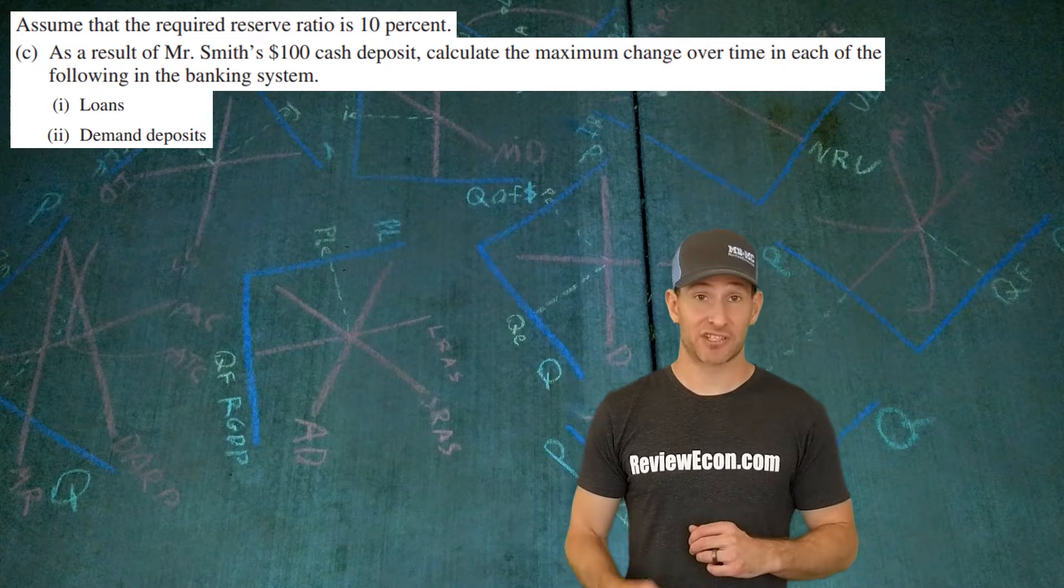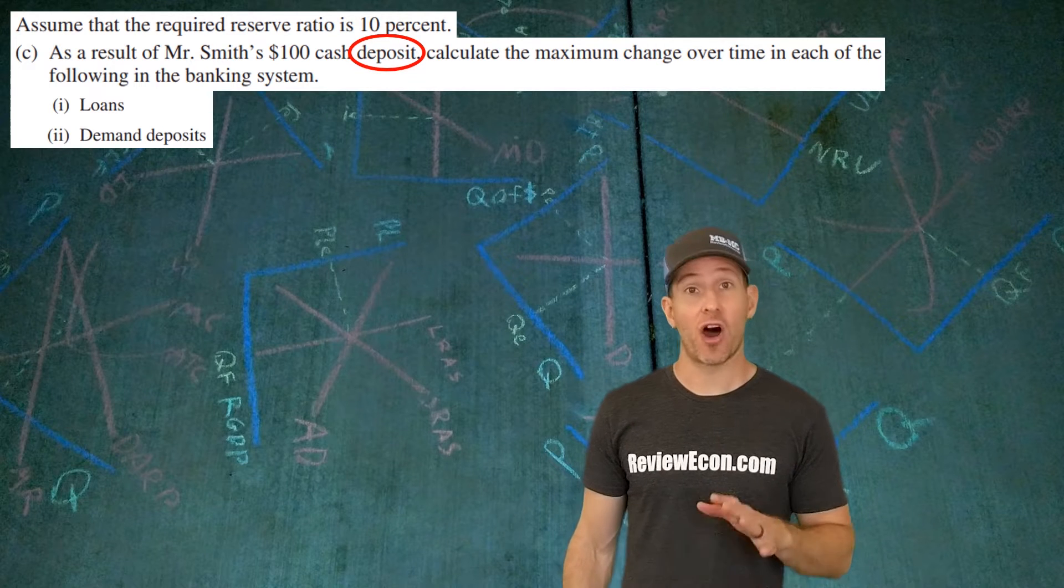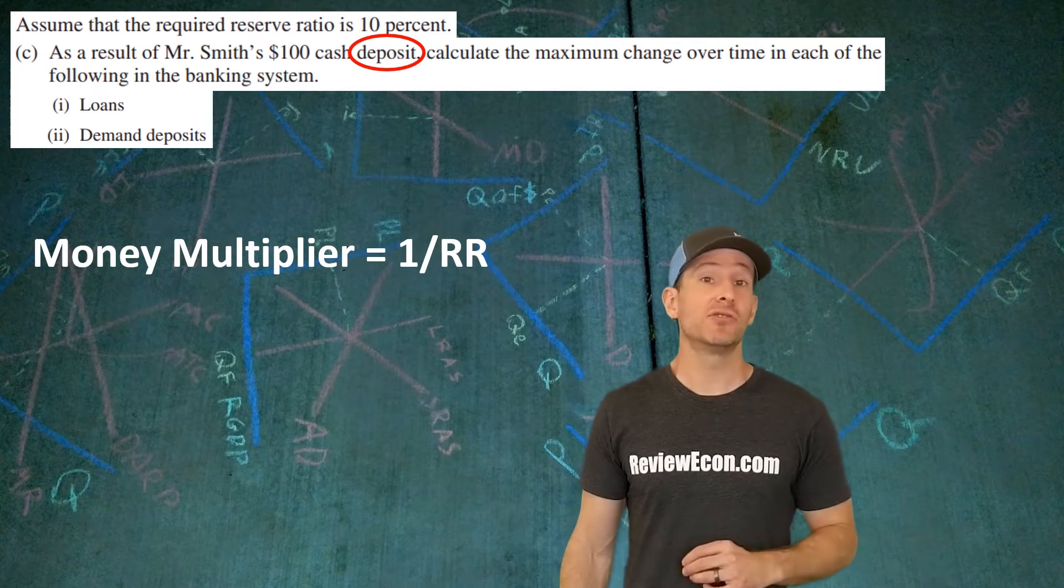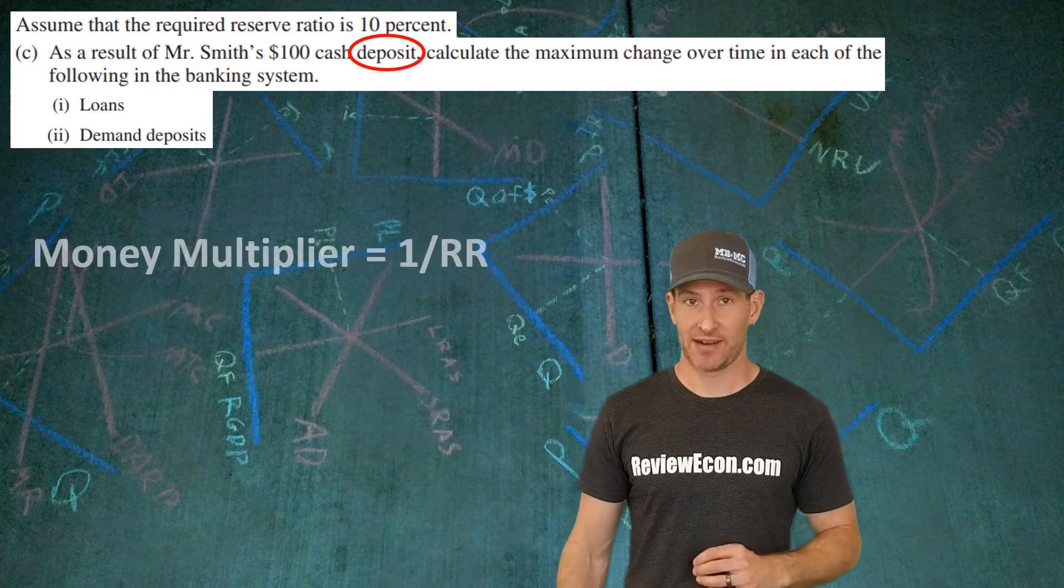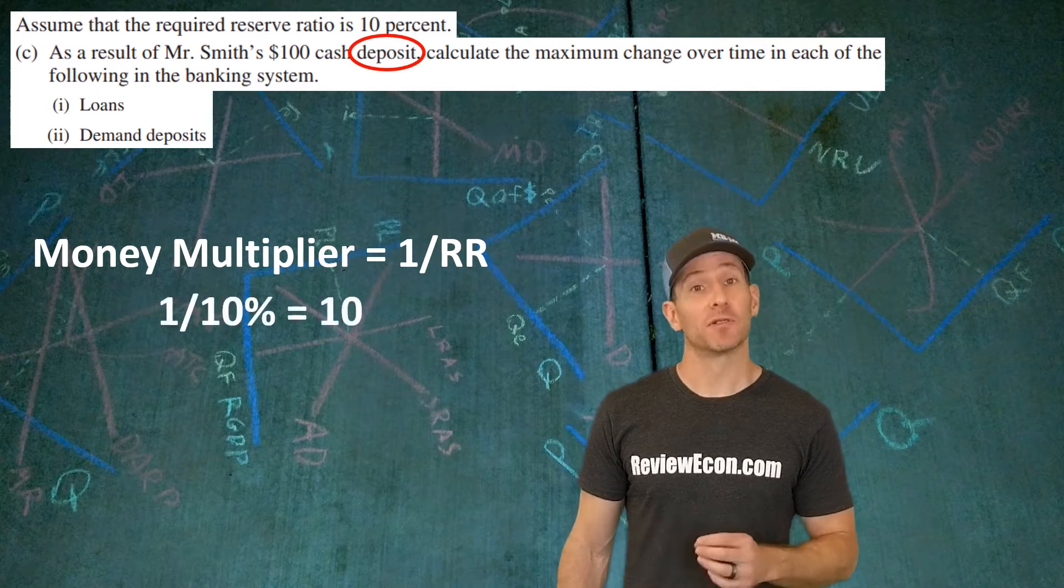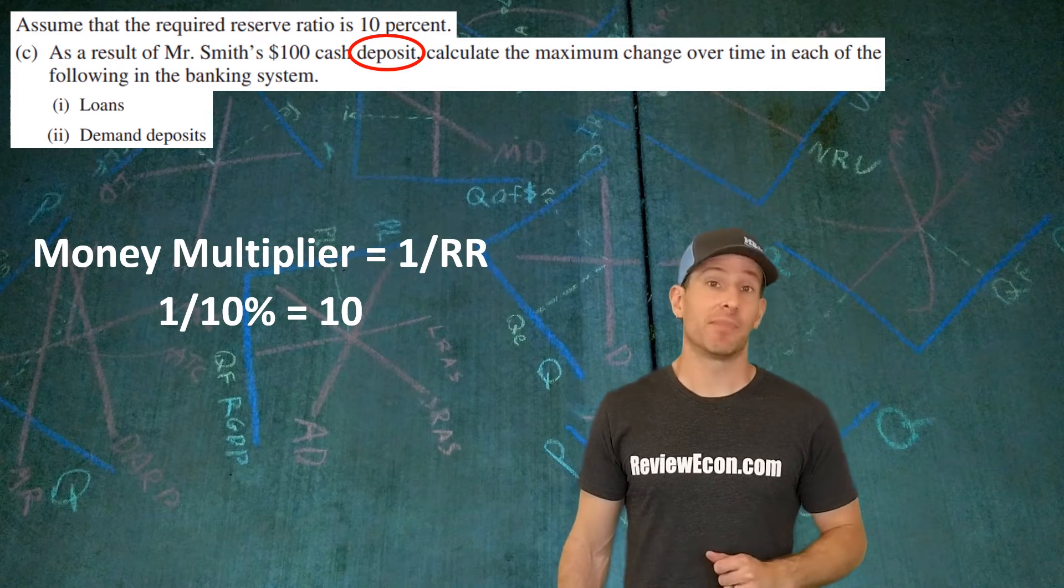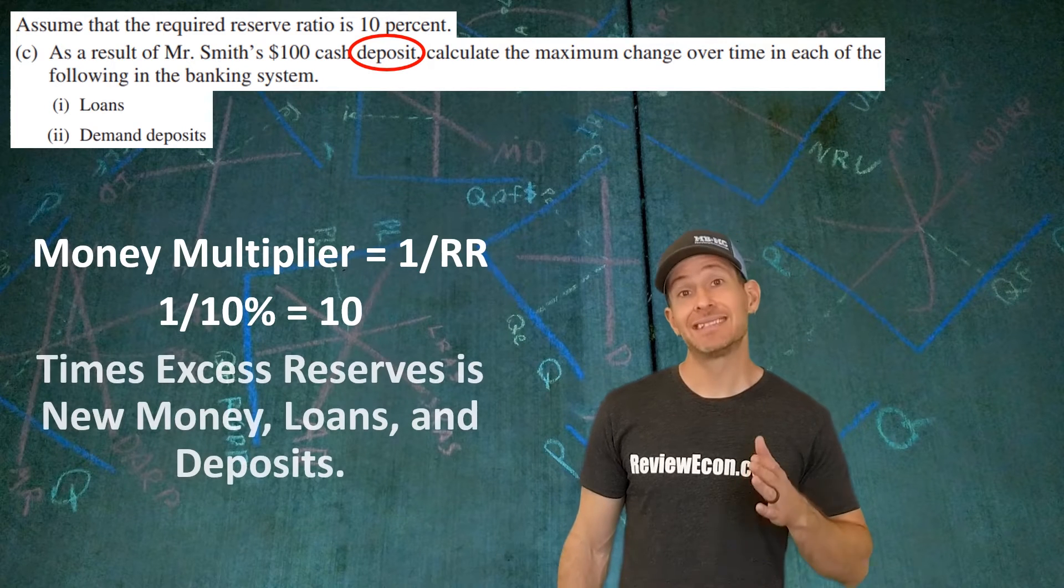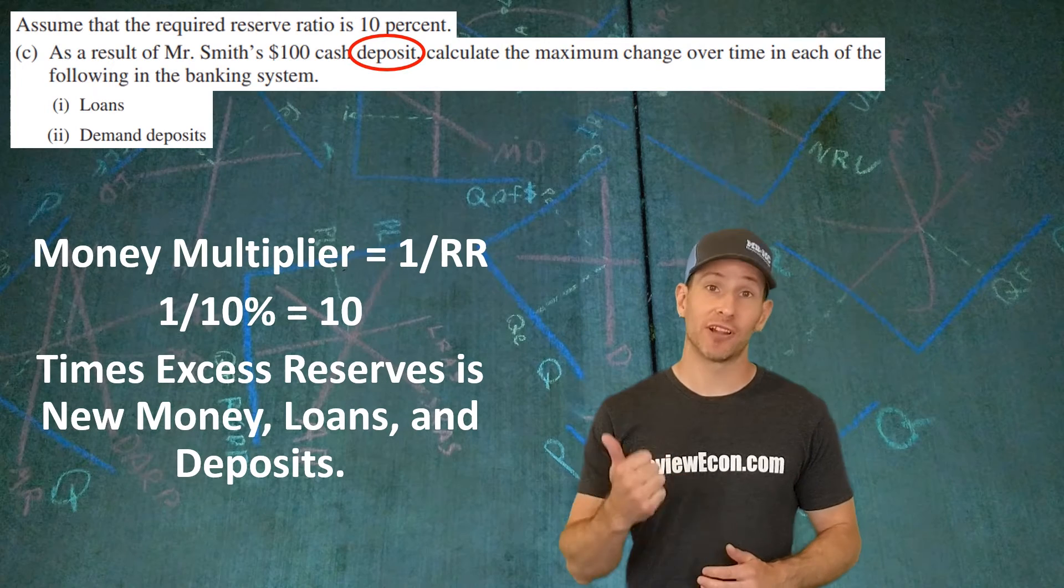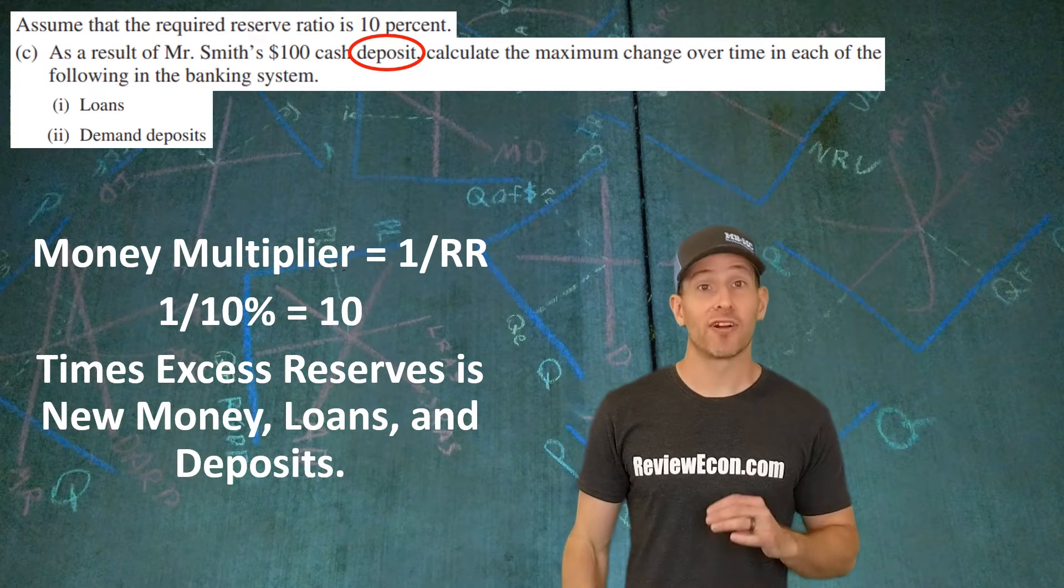Question C has two parts. Here, we are going to be looking at the impact of Mr. Smith's deposit on the total banking system, not just First Superior Bank alone. In order to do that, we need to calculate the money multiplier. The money multiplier is 1 divided by the reserve requirement. Here, the reserve requirement is 10%. 1 divided by 10% gives us a money multiplier of 10.